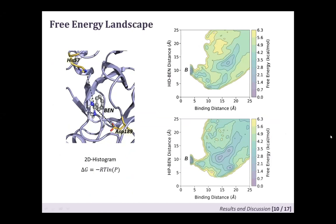To assess how the binding pathway depends on histidine 57, we plotted a two-dimensional histogram using the binding distance (distance from ligand to binding site) and the distance from the ligand to histidine 57. This 2D histogram can be related to the free energy landscape using a standard equation, giving us a free energy landscape projected onto two coordinates. We identify the most densely populated regions and trace the binding pathway, finding two very different pathways depending on the protonation state: one that goes right through histidine 57, and another that goes directly to the binding site.